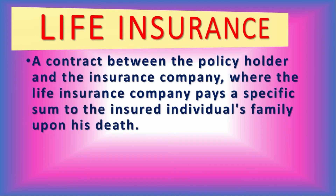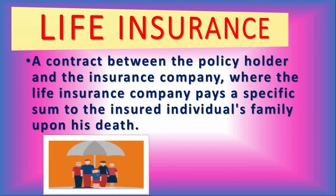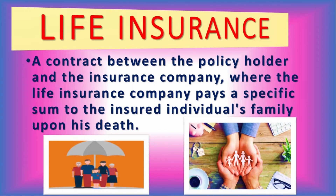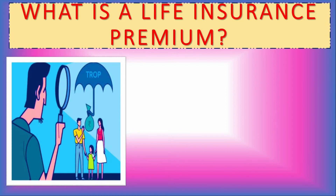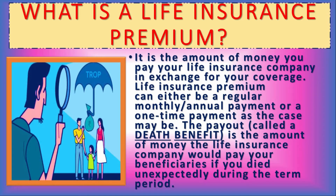Now we will look at what life insurance is, its types, and how it works. Life insurance is a contract between the policyholder and the insurance company, where the life insurance company pays a specific sum to the insured individual's family upon his death. The life insurance premium is the amount of money you pay your life insurance company in exchange for your coverage. There is also a payout called the death benefit — the amount of money the life insurance company would pay your beneficiaries if you die unexpectedly during the term period.